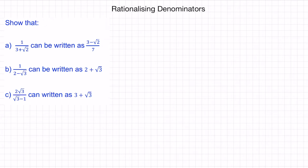We'll begin with question A, where we have 1 over 3 plus root 2. So this denominator is currently irrational because of the square root of 2.